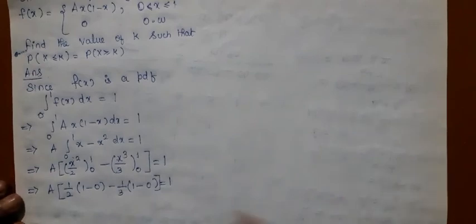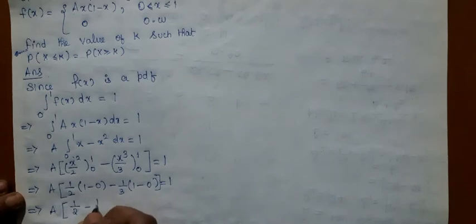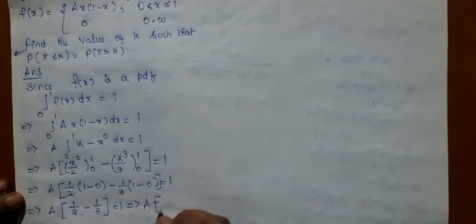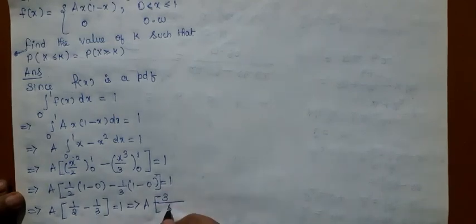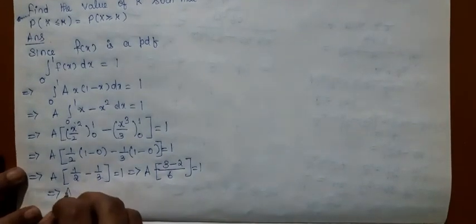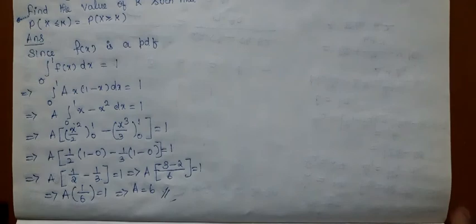Substituting the limits: 1/2 times (1 squared minus 0) minus 1/3 times (1 cubed minus 0) should equal 1. So A into (1/2 minus 1/3) equals 1. Taking 6 as the LCM gives A into 1/6 equals 1, so A is equal to 6. The first step is over — we have computed the value of A, which is 6.